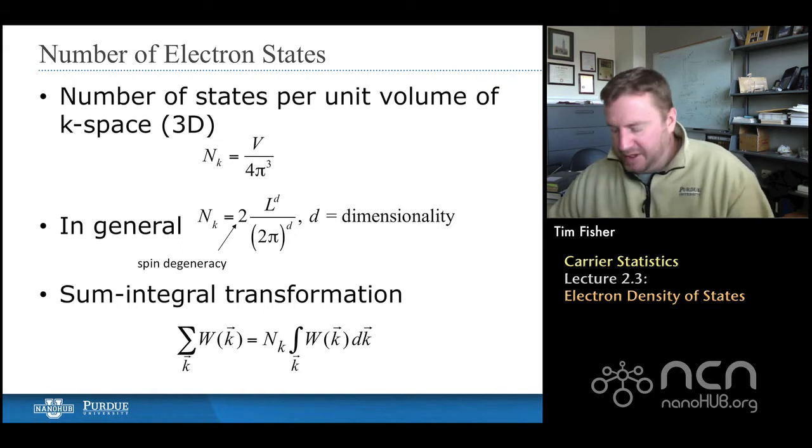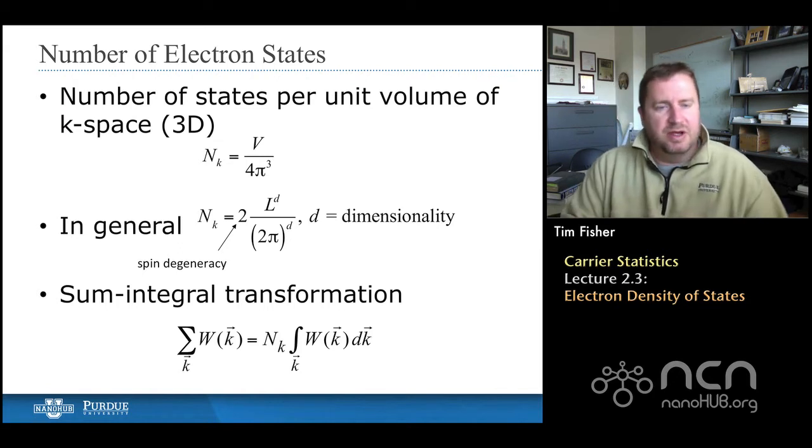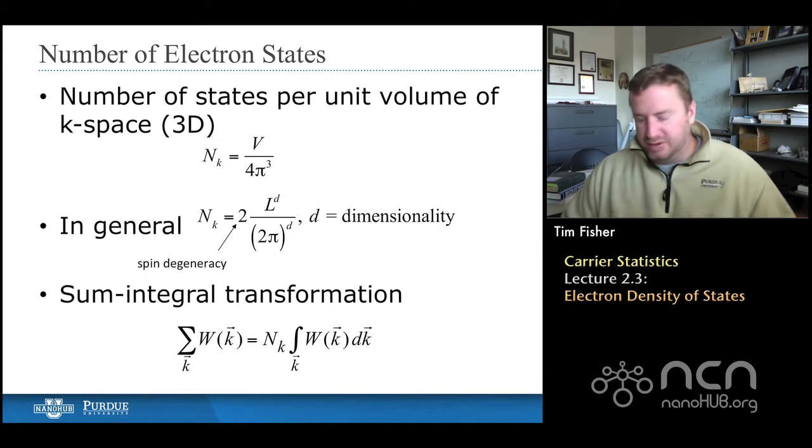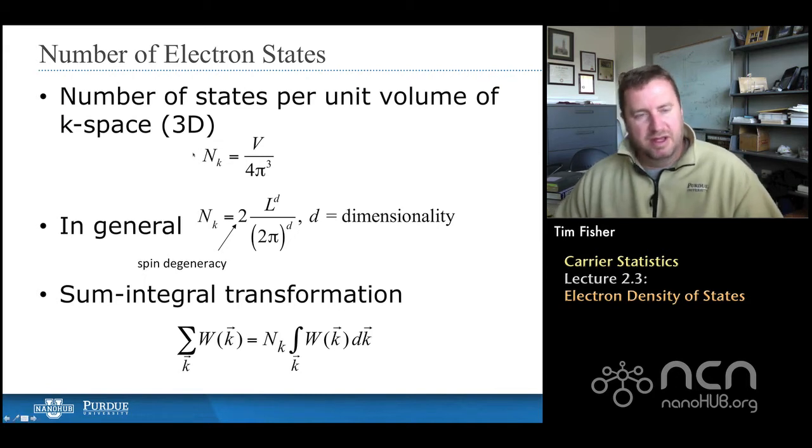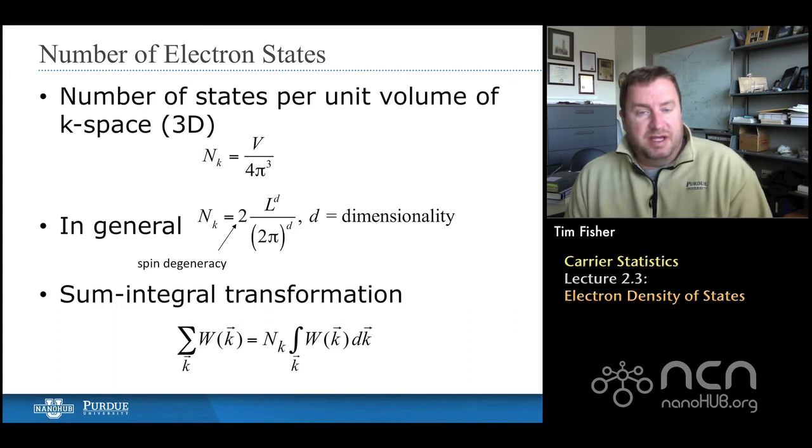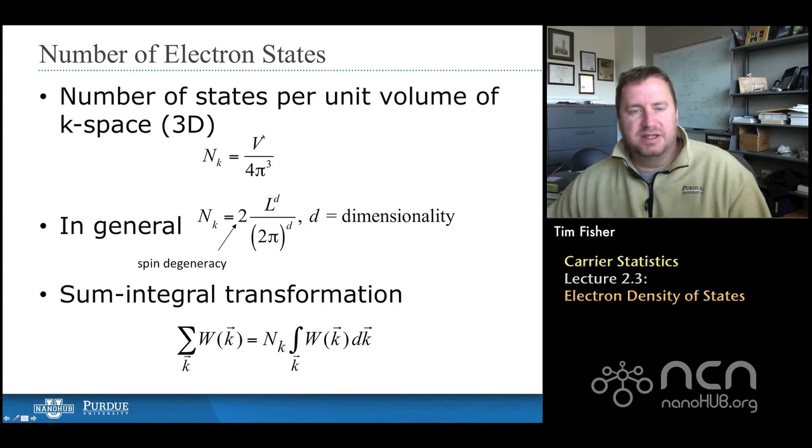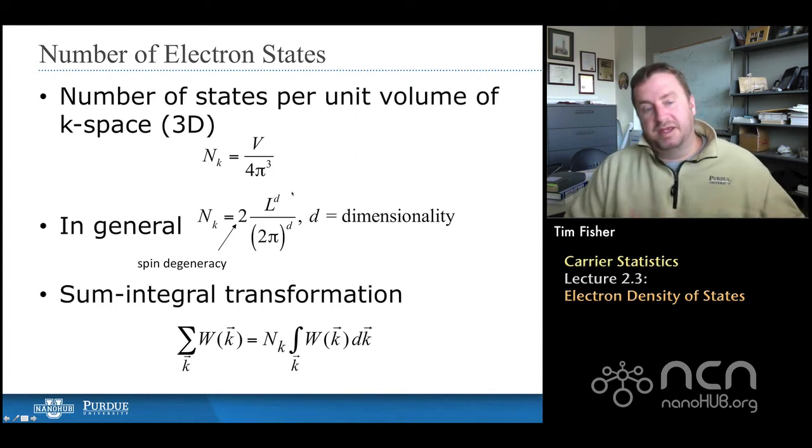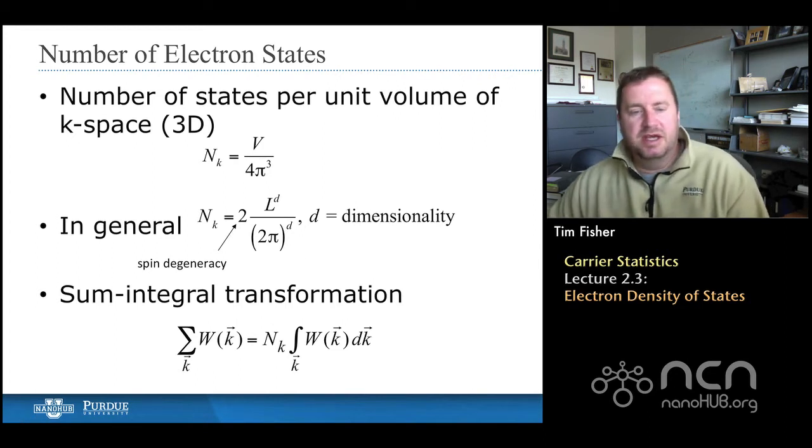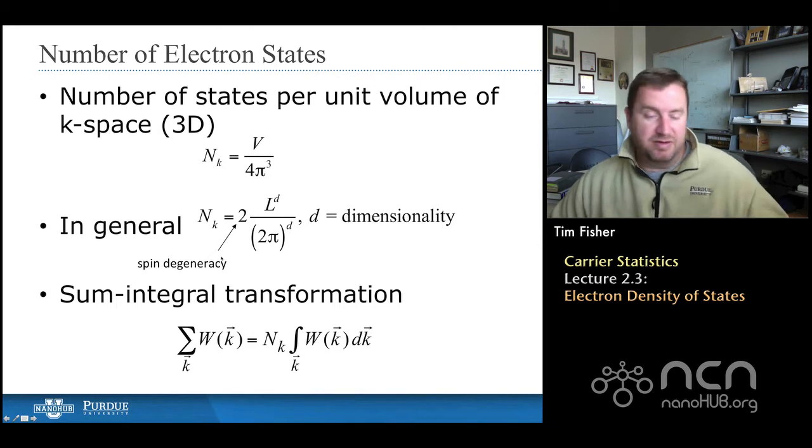So now we go through this and we say, well, and this is very similar to what we did for phonons. We're gonna describe some things a little bit differently, both because it's easier for electrons to do it this way, and also because you'll see it in other literature done this way. And I want to give you a few different ways of thinking about these different concepts. So the number of states per unit volume in k space for electrons, and this is for three dimensions, is the volume, that's the real space volume divided by four pi cubed. Now, you might think, well, it should be eight pi cubed, but if we look down at the next equation where we make it more general for different dimensionalities. The factor of two here comes from spin degeneracy. So that's up and down spin for electrons, which we didn't have for phonons.